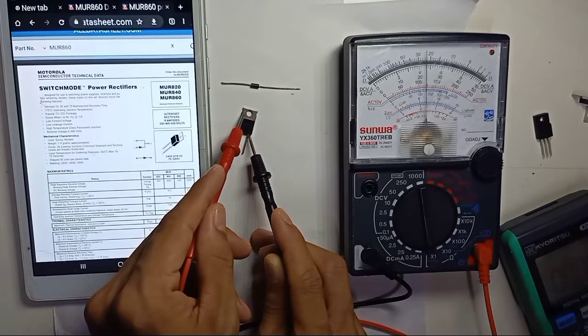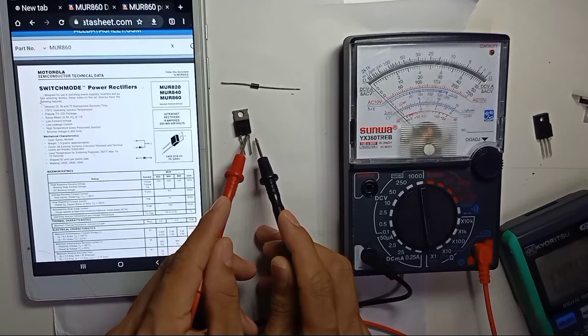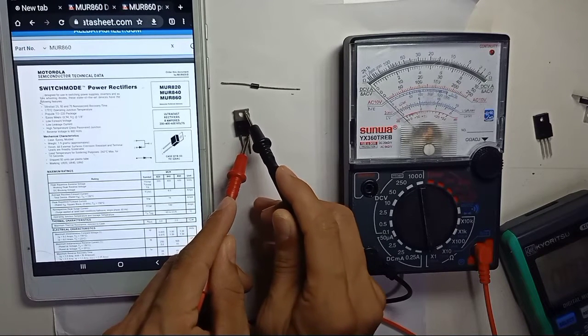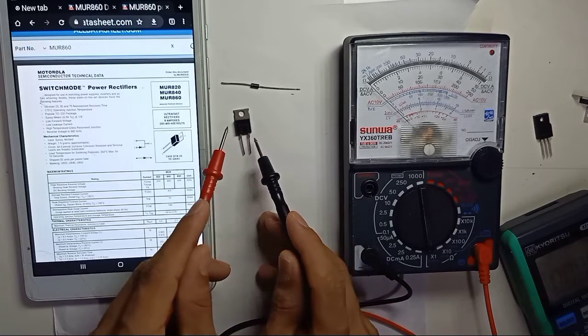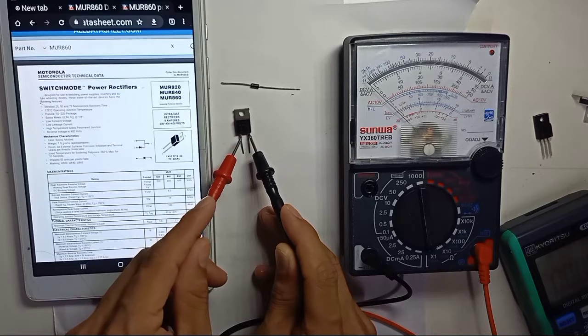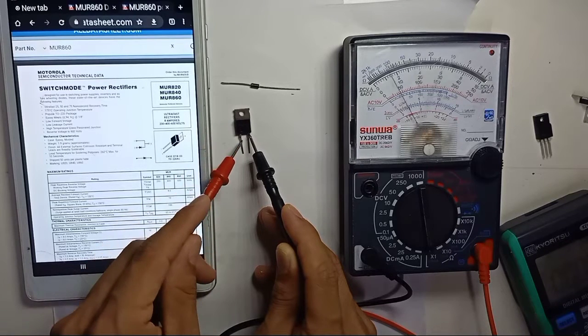But if you reverse polarity, which means cathode to anode, they will not have connection because this is just a diode. Anode to cathode conducts, cathode to anode doesn't. So this MUR is in good condition.